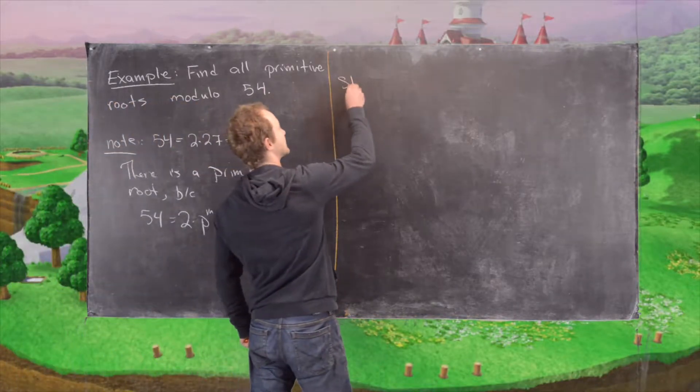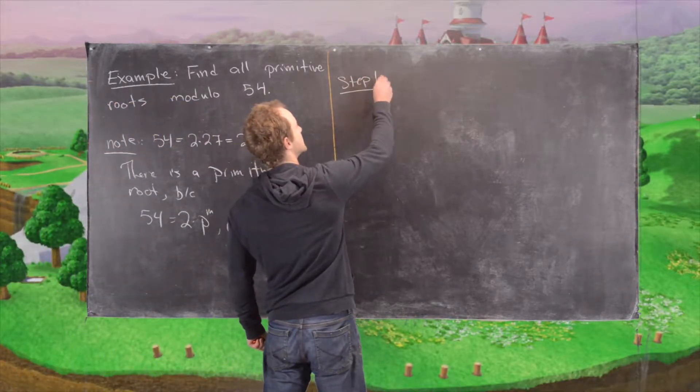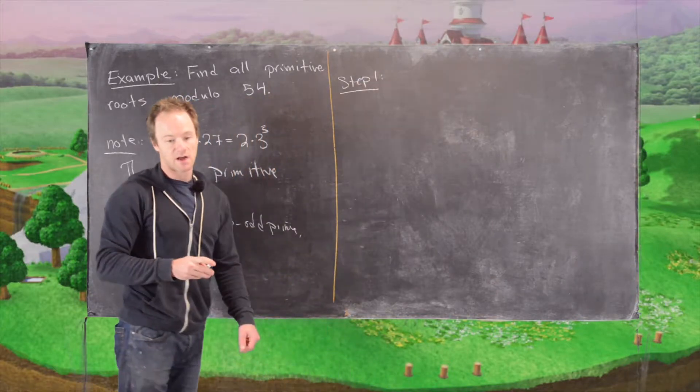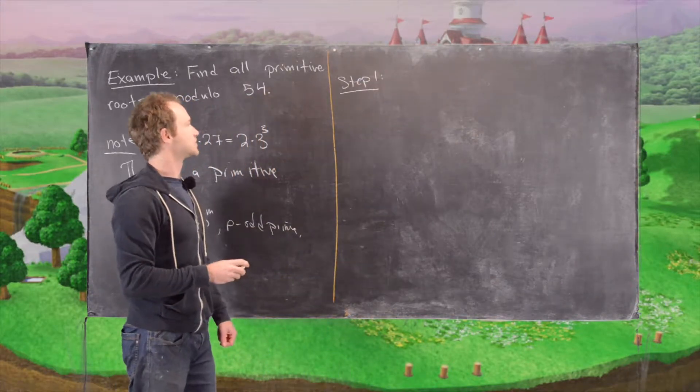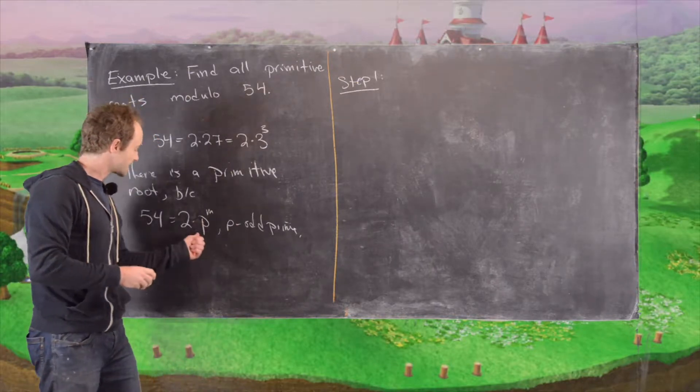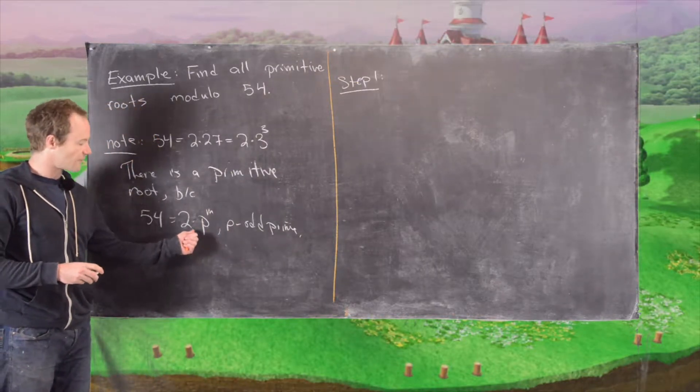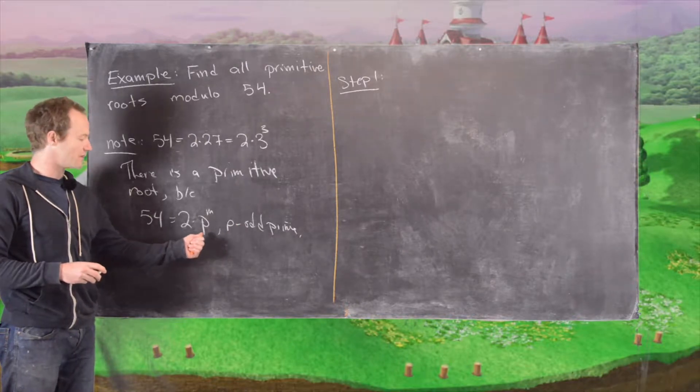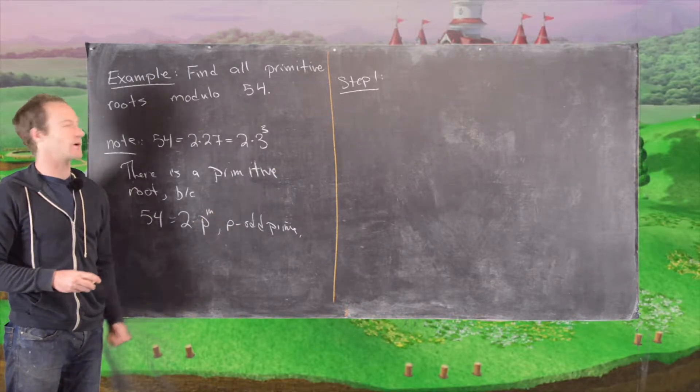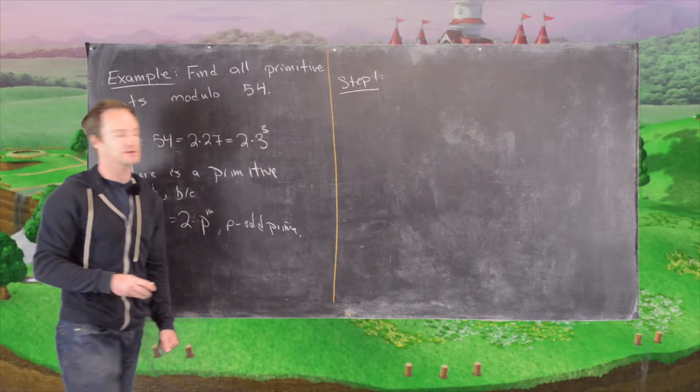So step 1 is as follows. We want to find a common primitive root modulo 3 and 3 squared. And in fact, whenever you're doing any problems like this, you want to start off with finding a common primitive root modulo p and p squared. It just happens that here we have p equals 3.